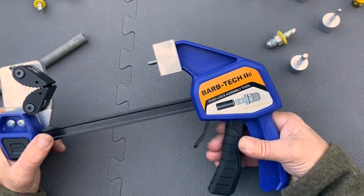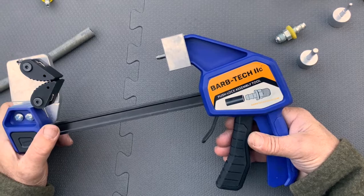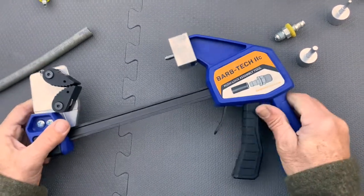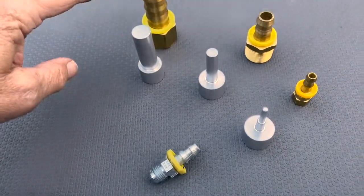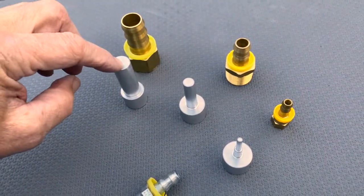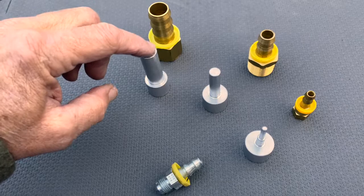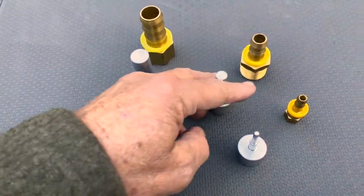First, I'm going to show you the standard mandrels that come with the tool for straight fittings. This one will work for half inch and three quarter inch.